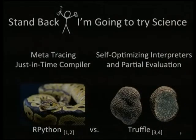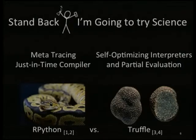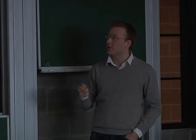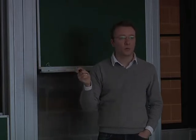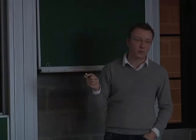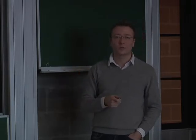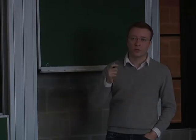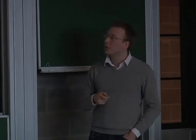So let's look at what science came up with recently. There are two interesting options. You might have heard of PyPy — they use infrastructure they nowadays call RPython, with a metatracing just-in-time compiler, which is a very interesting approach. And then very recently, Oracle Labs open sourced a project called Truffle, with self-optimizing interpreters based on partial evaluation, and a whole toolchain based on the Graal just-in-time compiler. I'm going to briefly look into both.